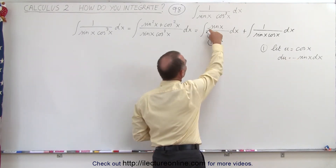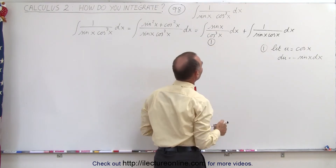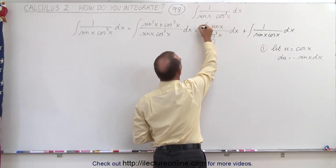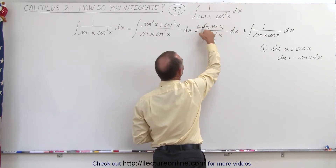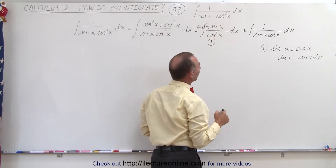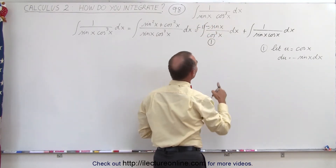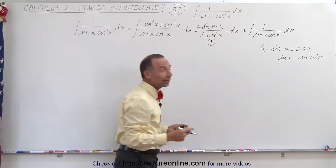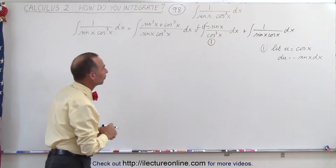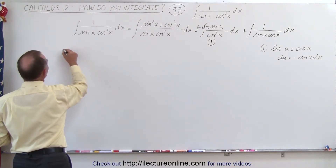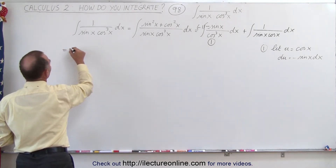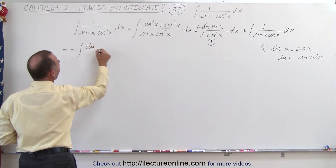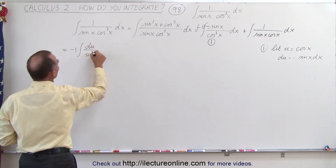We look up in the numerator and we see a positive sine of x, so we need a negative in front. We multiply by negative one and negative one, so now we have u cubed in the denominator and du in the numerator. We can go ahead and write this as negative 1 times the integral of du divided by u cubed.